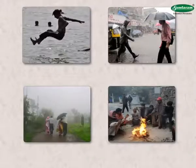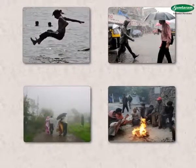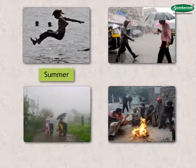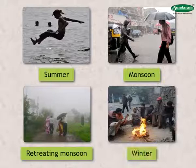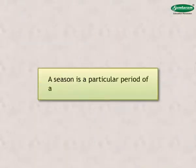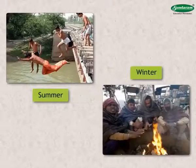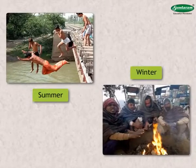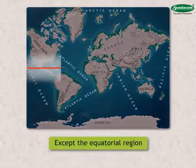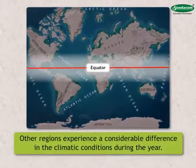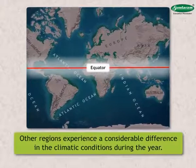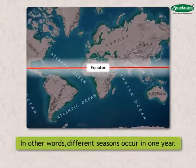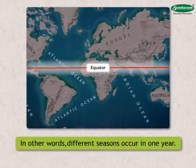We already know that there are four seasons in India: summer, monsoon, the season of retreating monsoon, and winter. A season is a particular period of a year having a specific climate. The climate of each season is different. Except the equatorial region, other regions experience a considerable difference in climatic conditions during the year, meaning different seasons occur in one year.